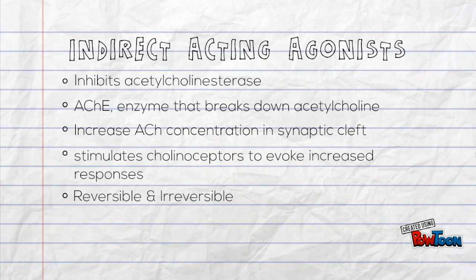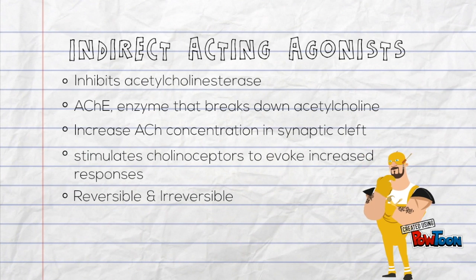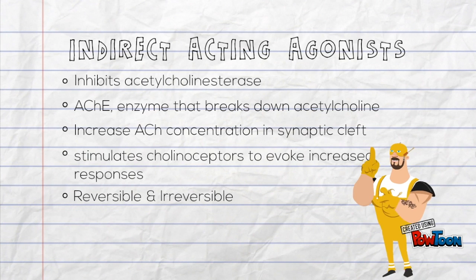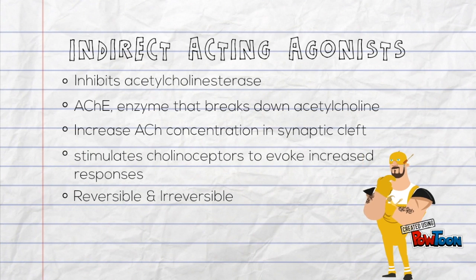For indirect acting agonists, they inhibit the activity of acetylcholinesterase, which is the enzyme that breaks down acetylcholine. The increase of acetylcholine concentration in the synaptic cleft will stimulate the cholinoreceptors to evoke increased responses. Indirect acting agonists are divided into reversible and irreversible.